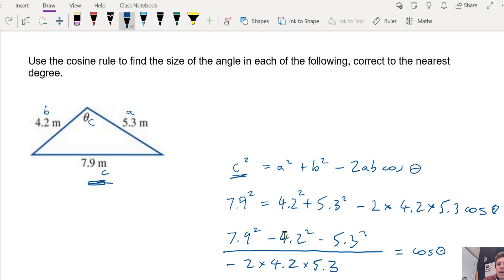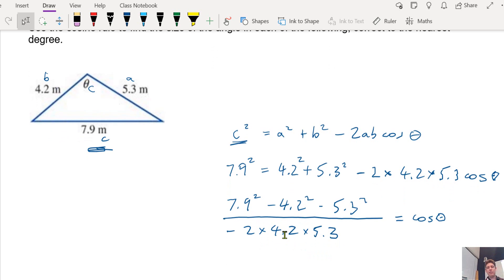And how do we get theta by itself, the angle by itself? We're going to do cos negative 1, or the inverse of cos. So cos negative 1 all of that stuff to get rid of the cos.